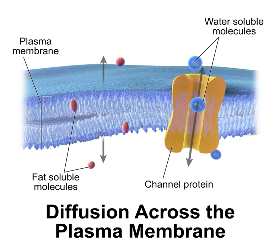Plasma membranes also contain carbohydrates, predominantly glycoproteins, but with some glycolipids, cerebrosides, and gangliosides. Carbohydrates are important for cell-cell recognition in eukaryotes; they are located on the surface of the cell where they recognize host cells and share information. Viruses that bind to cells using these receptors cause infection. Glycosylation generally occurs on the extracellular surface of the plasma membrane. The glycocalyx participates in cell adhesion and lymphocyte homing. The penultimate sugar is galactose and the terminal sugar is sialic acid, as modified in the Golgi apparatus. Sialic acid carries a negative charge, providing an external barrier to charged particles.